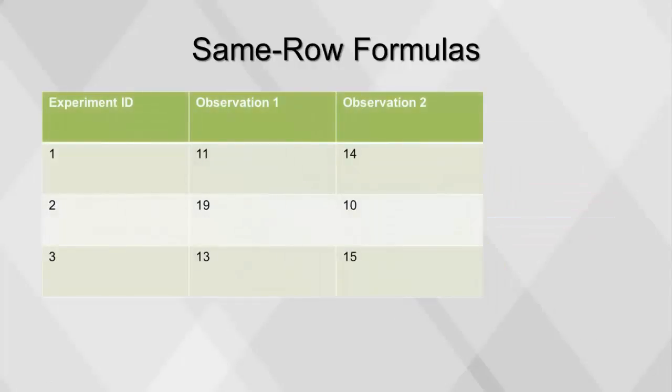In this table, we will create an observation average column using the average formula, which averaged values from the Observation 1 and Observation 2 columns.